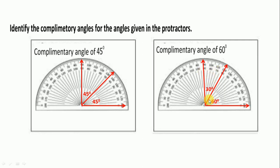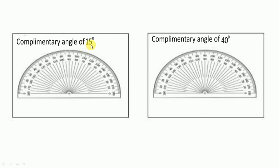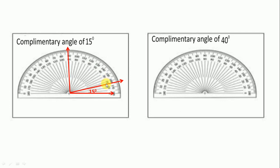Now for the complementary angle of 15 degrees. First we draw 0 degree line and then 90 degrees, and we draw 15 degrees here. This is the 15 degree angle, and its complementary is the remaining portion — counting 10, 20, 30, 40, 50, 60, 70, and halfway is 75 degrees.